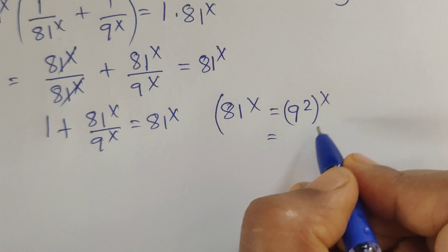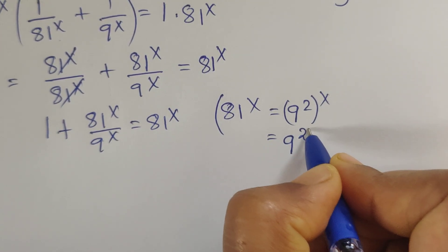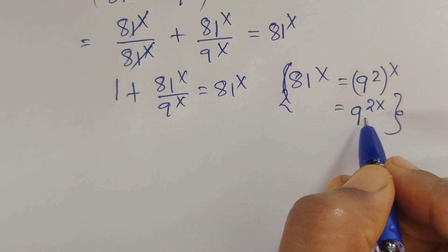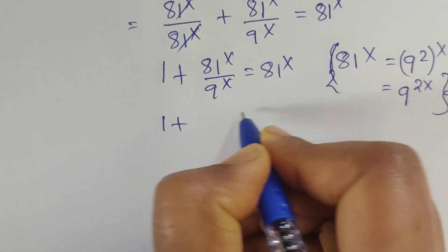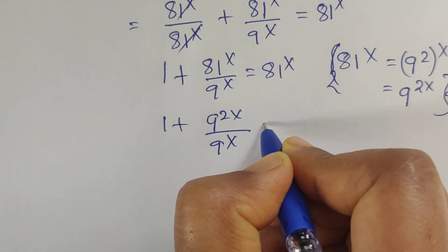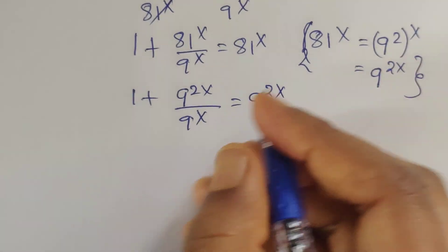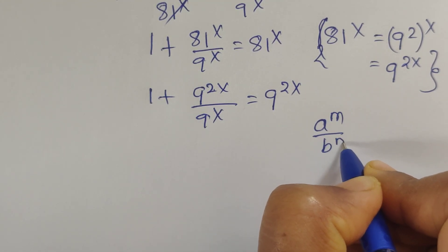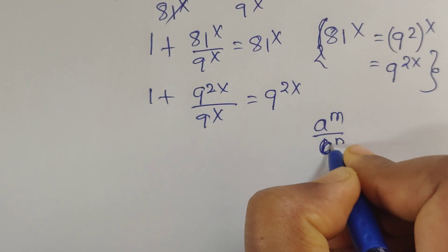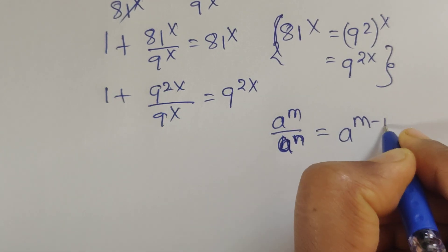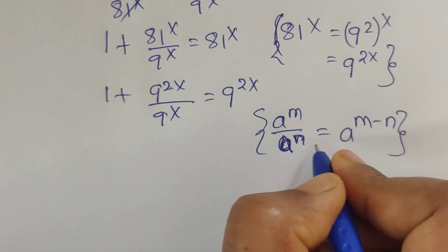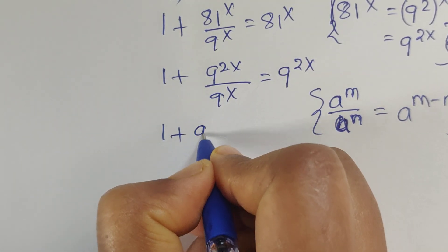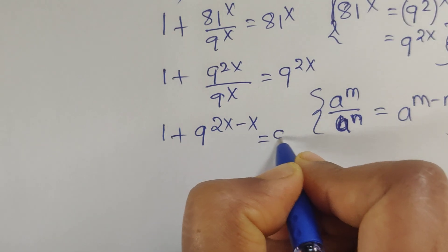So 81 we can write as 9 squared, whole to the power of x, which again we can write as 9 to the power of 2x. Now applying the formula a to the power of m divided by a to the power of n equal to a to the power of m minus n, here we can write 1 plus 9 to the power of 2x minus x equal to 9 to the power of 2x.